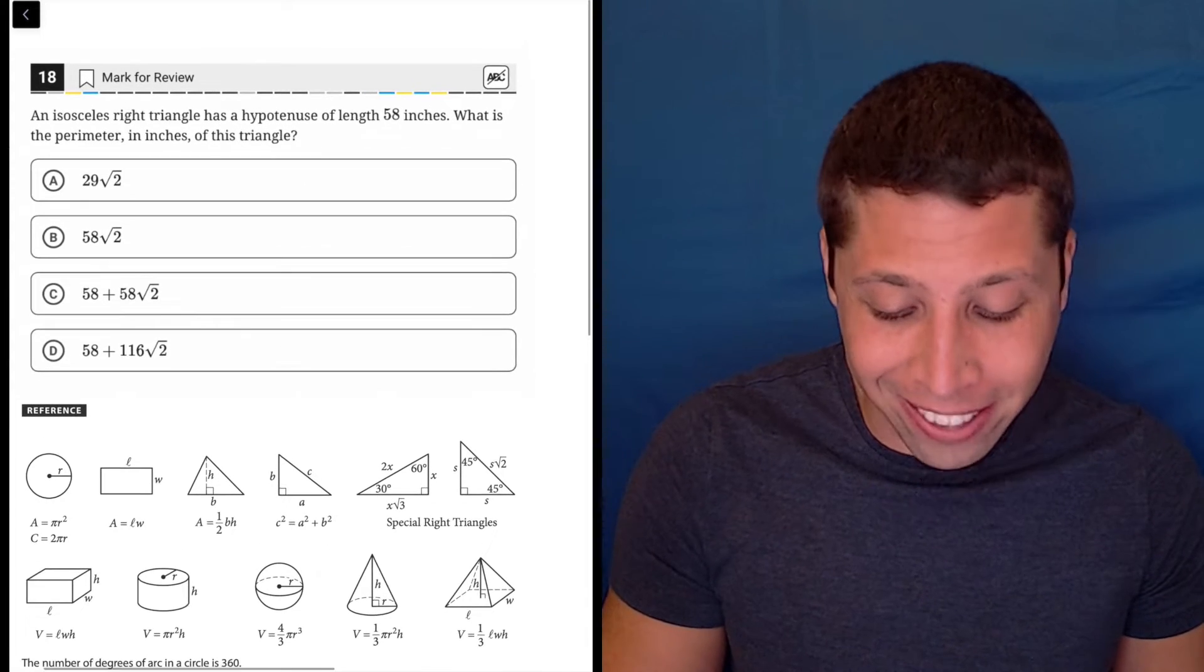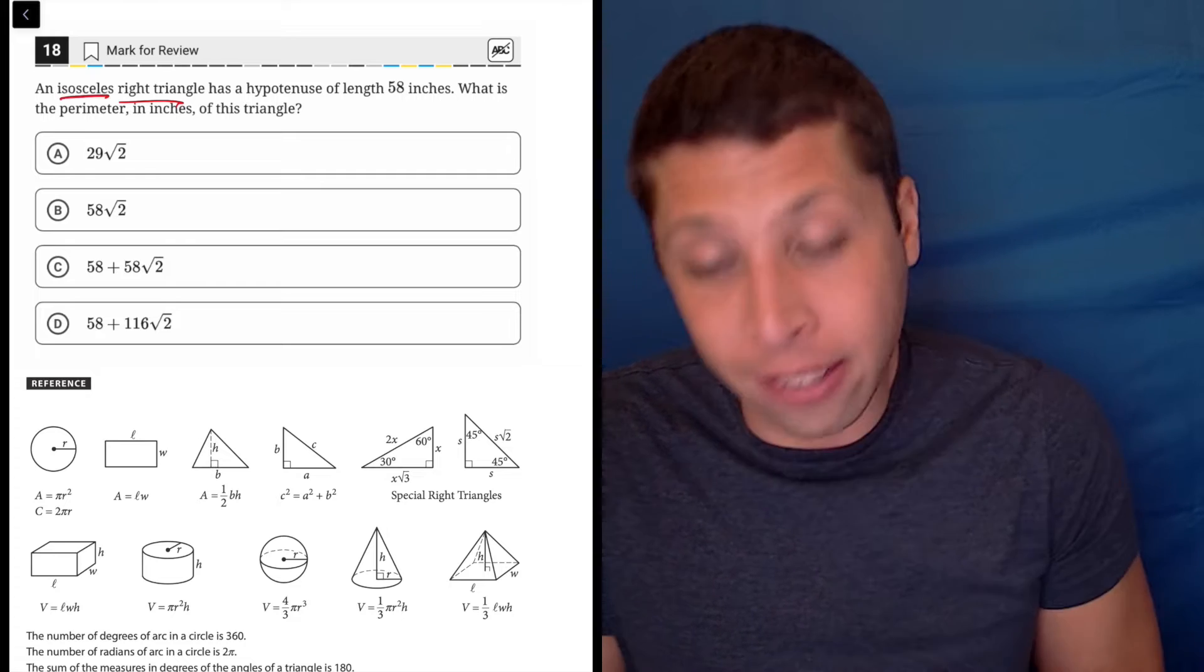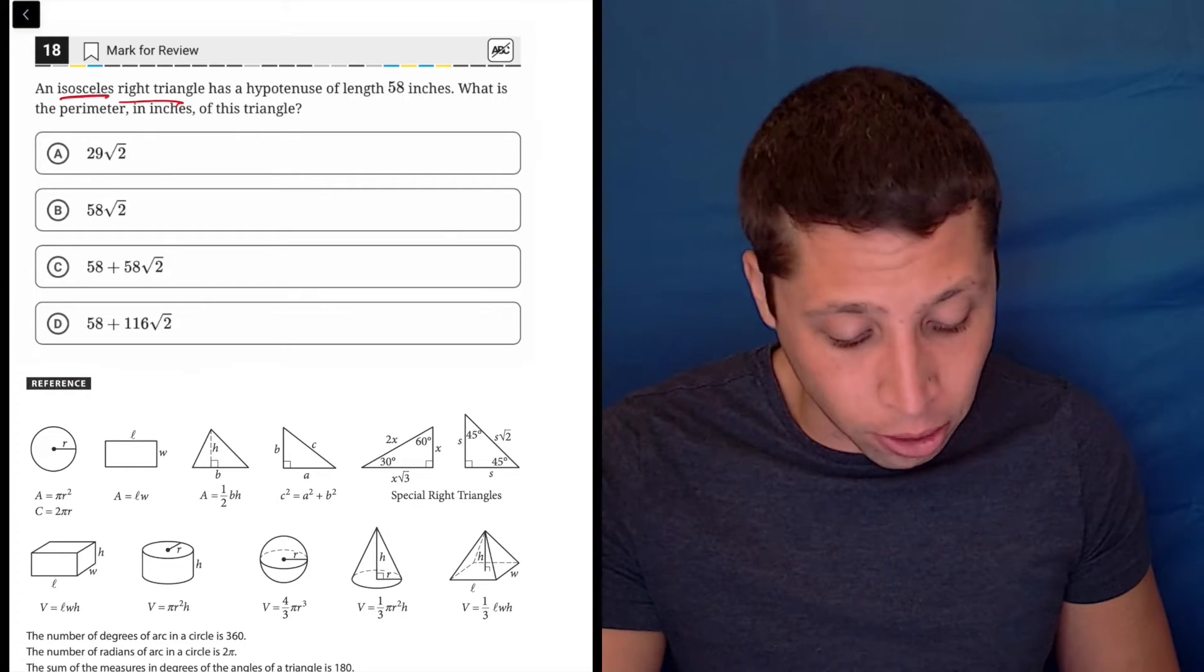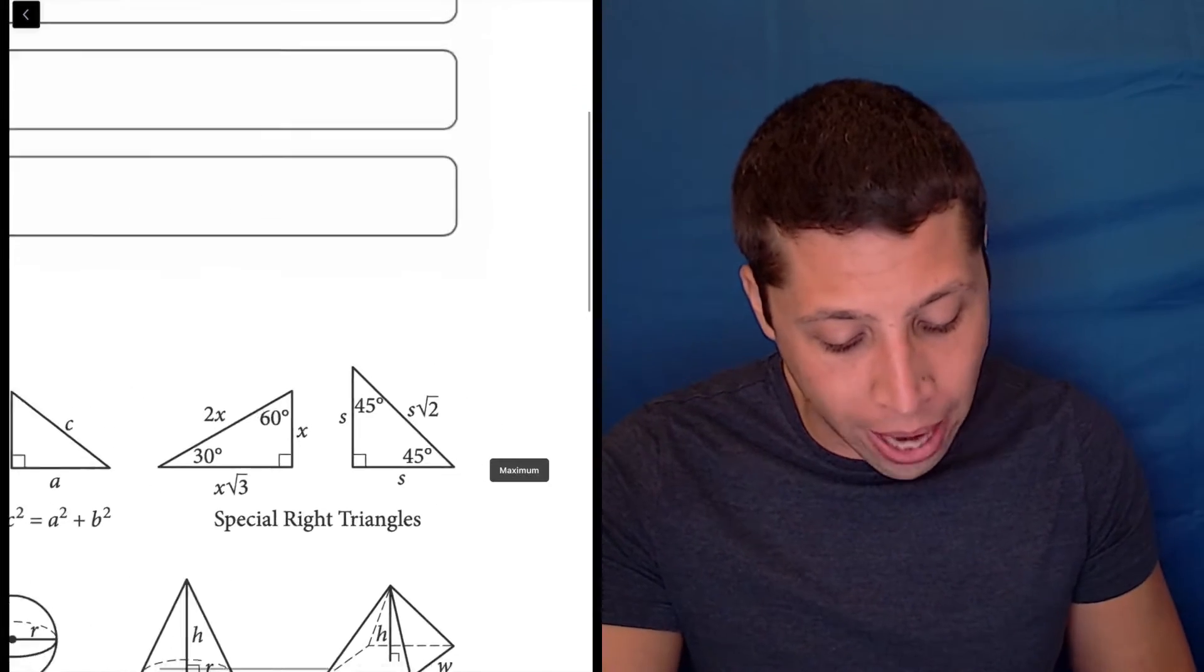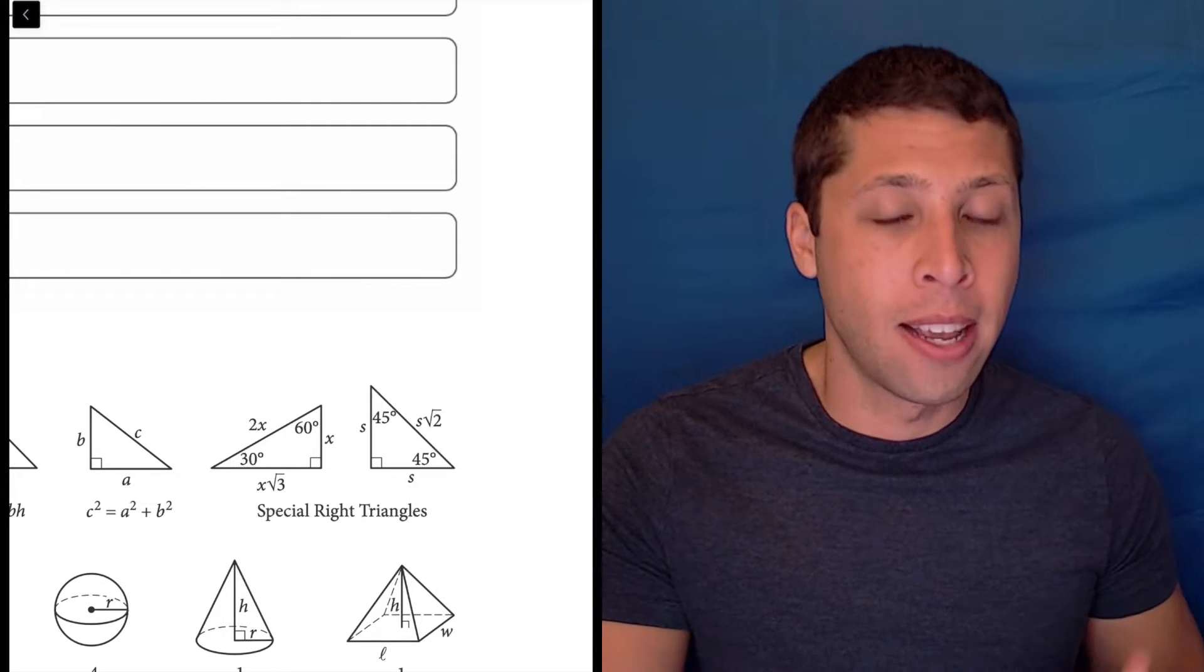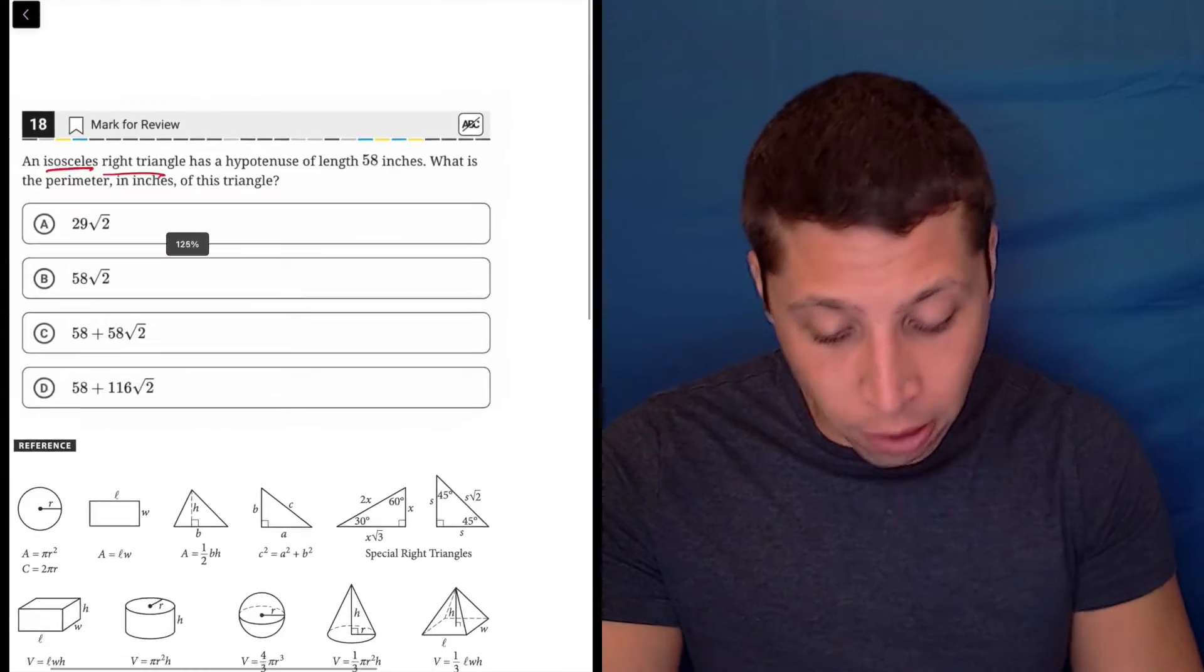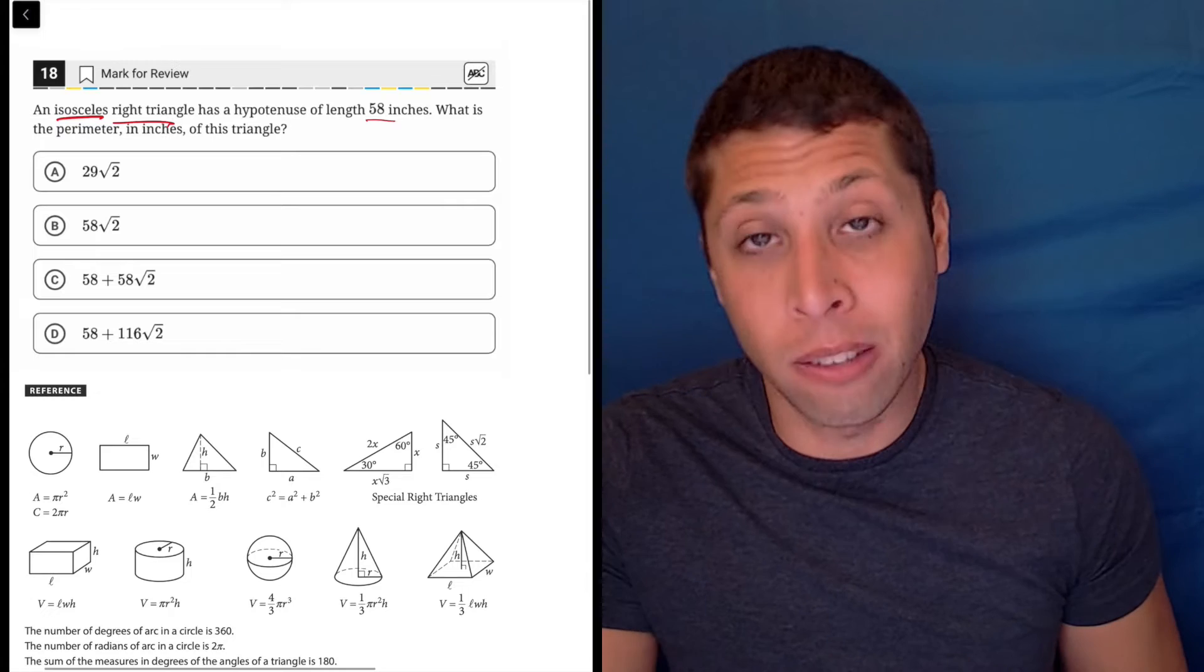They're not coming out and saying it, but it's a right triangle and it has two sides of the same, an isosceles right triangle that can only happen when we have this 45-45. What this reference chart is telling us is that the sides of triangles like this are always in the same proportion and they're telling us the hypotenuse is 58.